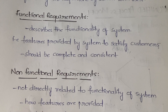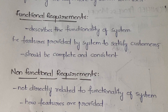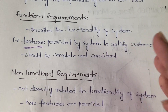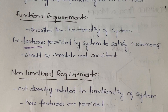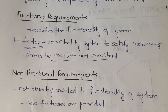First is functional requirements. Functional requirements describe the functionality of the system — not how the system is working, but what are the functions provided by the system. They specify what features are provided by the system in order to satisfy the customers. Functional requirements should always be complete — meaning all services which the user is expecting should be satisfied.